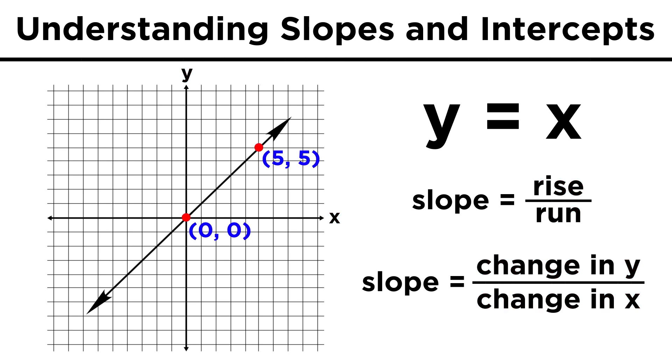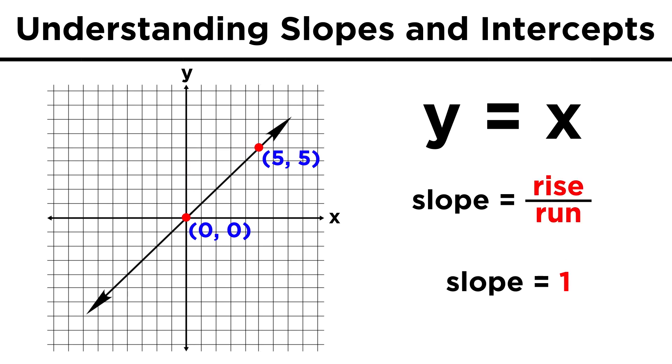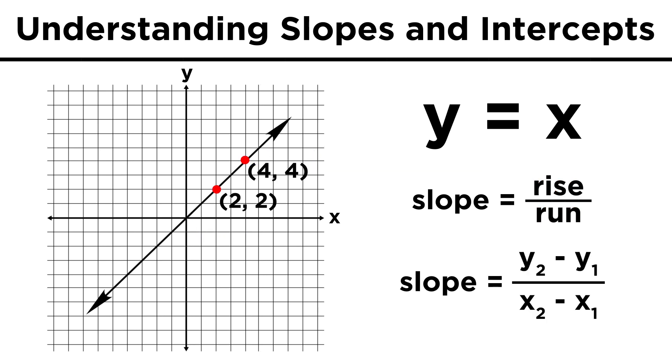We can pick any two points on this line, and with these points, we take the difference in their y values and divide by the difference in their x values. Y is up and down, or the rise, and x is side to side, or the run. Rise over run. Let's pick these two points, two two and four four. Rise over run can be represented this way, y two minus y one over x two minus x one, so we just plug the coordinates in. Y two is four, y one is two, x two is four, and x one is two. We simplify and get two over two, or one. The slope of this line is one.